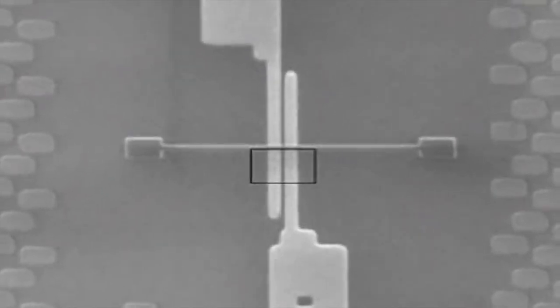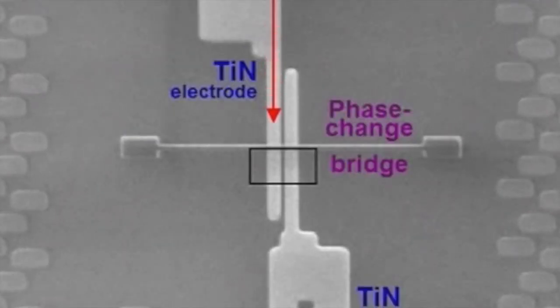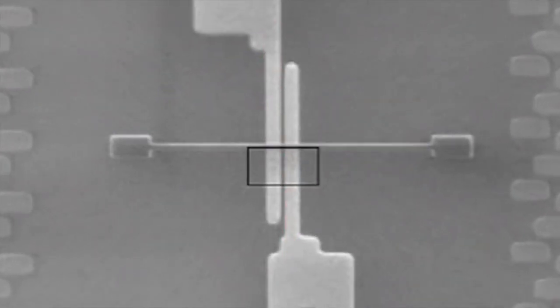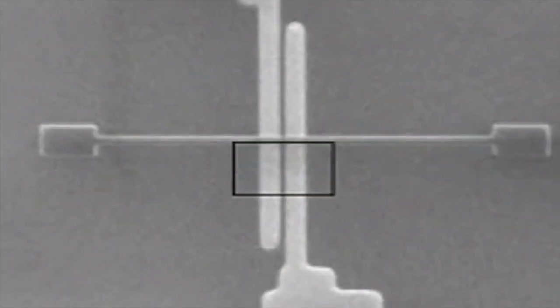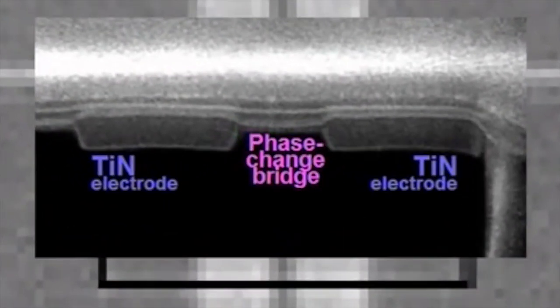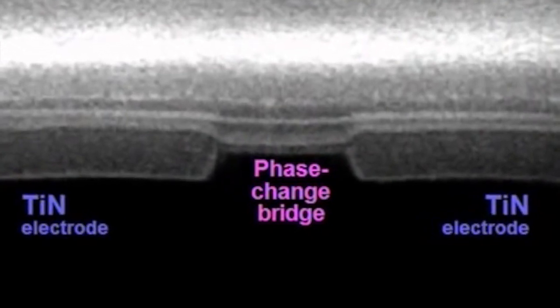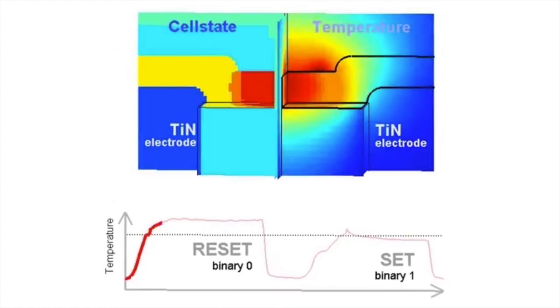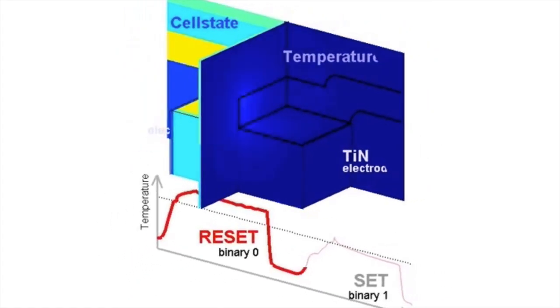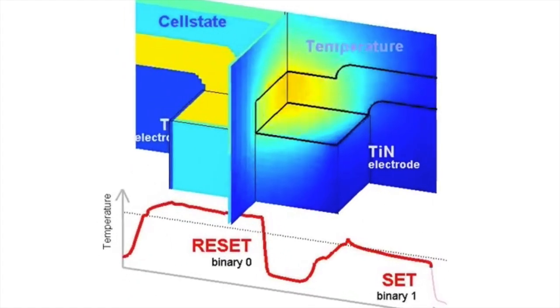Using an electrical pulse, phase-change materials can be switched within nanoseconds between their amorphous and crystalline phase, which possess a large contrast in resistivity. As a storage technology, this unique property is used to store two or even more logical states.